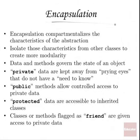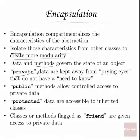Now we have encapsulation. This is where we take the data and compartmentalize all of the characteristics of the abstraction into our object. We want to isolate the characteristics from other classes and create modularity. The data and the methods will govern the state of an object. The object is just a car object — the current speed is one of the attributes. Your state of your car object is that your speed is 25 miles per hour. Then you'll have a method that says we need to apply acceleration to increase that speed to a new state. Private data is one of the values of object-oriented — to declare data as private to really increase your modularity and prevent other code from modifying your object in ways you don't allow.